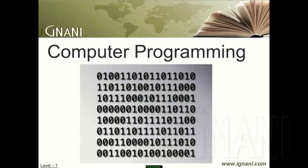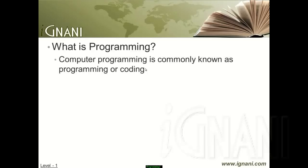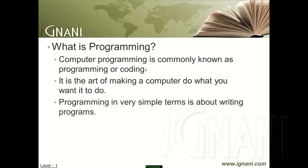Programming is often referred to as computer programming, so this brings us to our first and important question: what is programming? Computer programming, commonly known as programming or coding, is the art of making a computer do what you want it to do. Programming in very simple terms is about writing programs. A sequence of instructions written to perform a specified task for a computer is commonly known as a program, but is also referred to as a software program or computer program. A computer being just hardware requires instructions to act upon, and these instructions are executed in the computer's CPU.